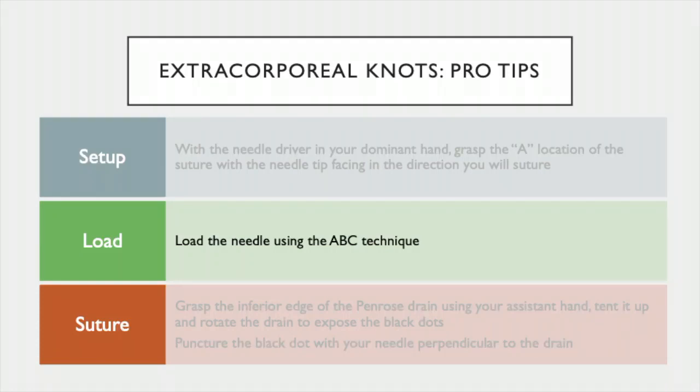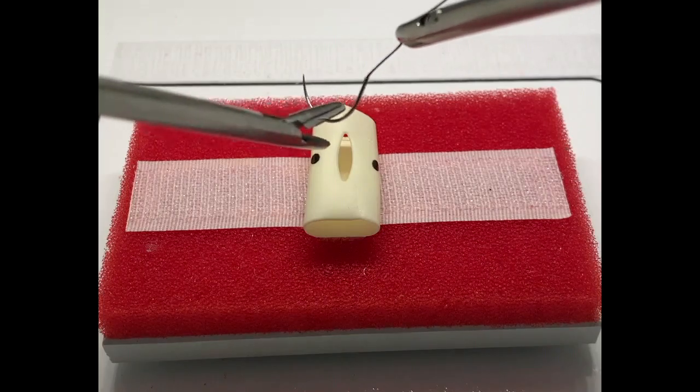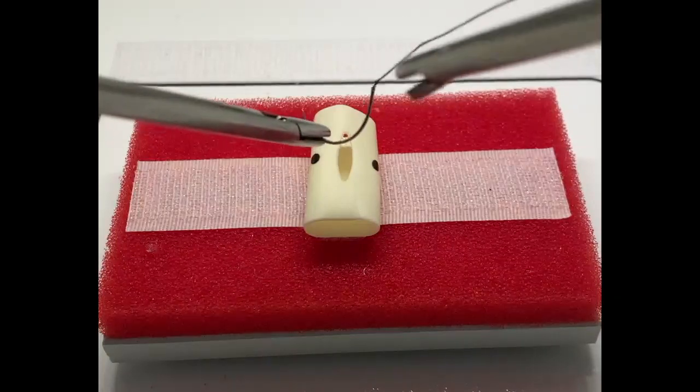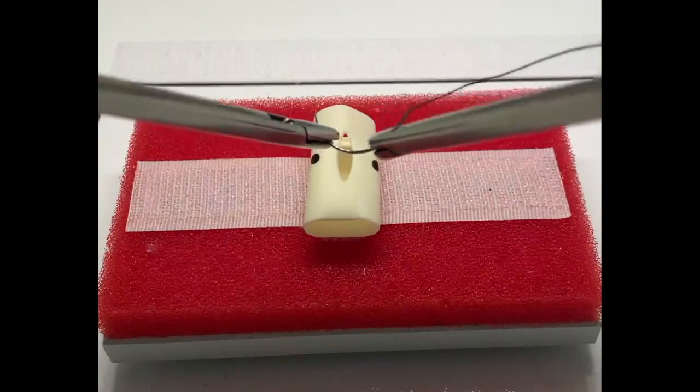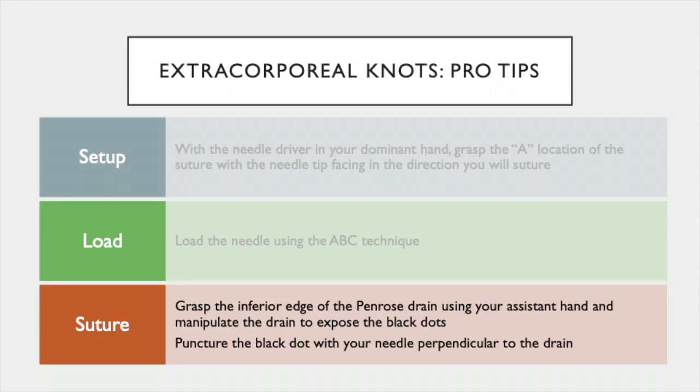Next, load the needle using the ABC technique. To review, the needle is introduced from A, grasped at B, adjusted, and then re-grasped at C in a perpendicular manner. The next pro tip is suturing.